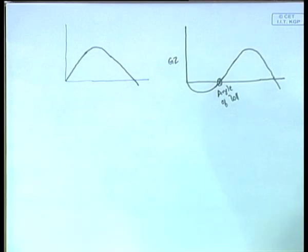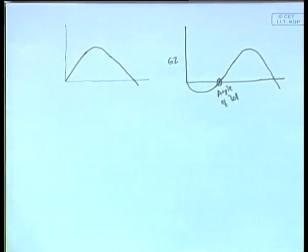The ship reaches the angle known as the angle of loll and remains at that angle because any further heeling will cause it to come back to that position. The ship therefore continues to move at this particular heeled angle.